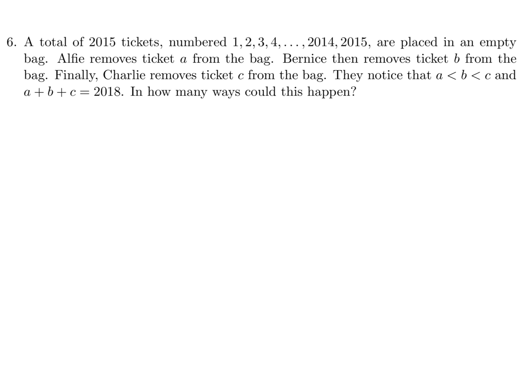A total of 2015 tickets numbered 1 through 2015 are placed in an empty bag. Alfie removes ticket a from the bag, Bernice then removes ticket b from the bag, and finally Charlie removes ticket c from the bag. They notice that a is less than b, less than c, and a plus b plus c is 2018. How many ways could this happen? They told me that a plus b plus c is 2018, and a is less than b and less than c.